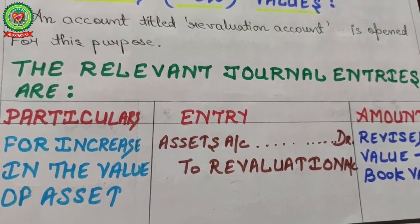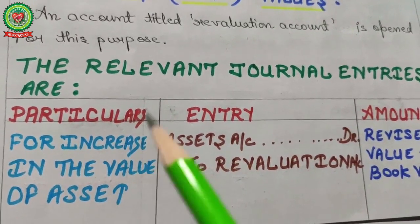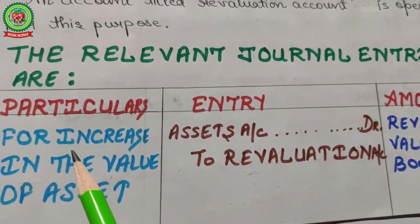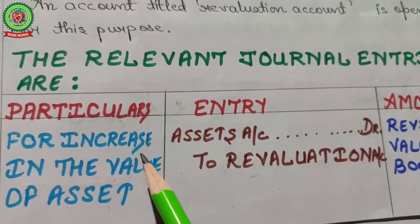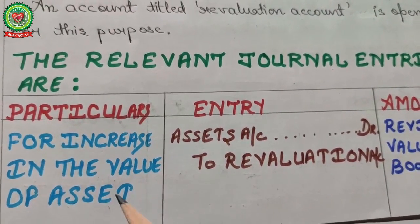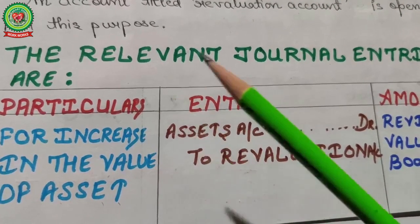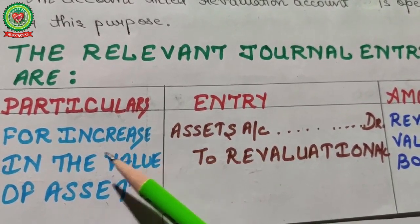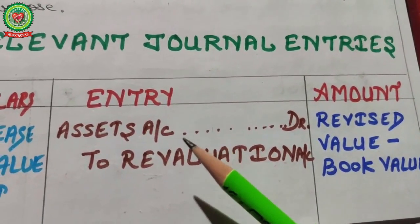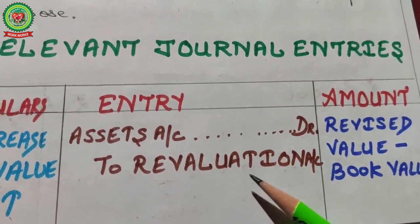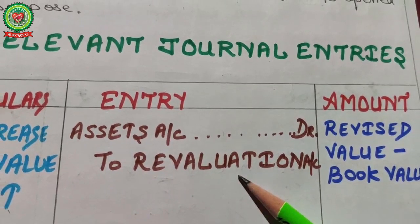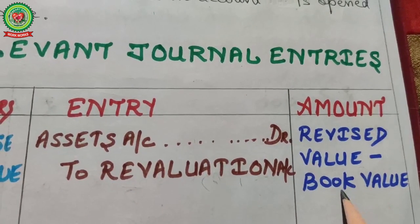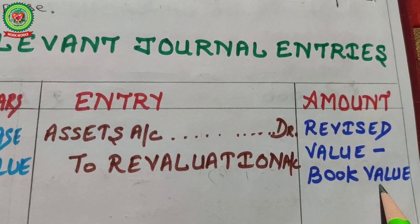Now let's look at the journal entries for the revaluation account. For increase in the value of an asset — if your asset value increases, say from 20,000 to 40,000, an increment of 20,000 — the entry is: Asset Account debited, Revaluation Account credited. We credit the revaluation account because credit means all incomes and gains. The amount is revised value minus book value.